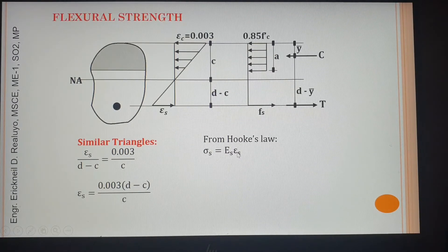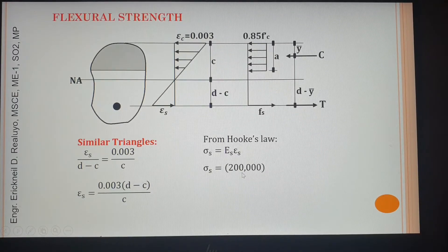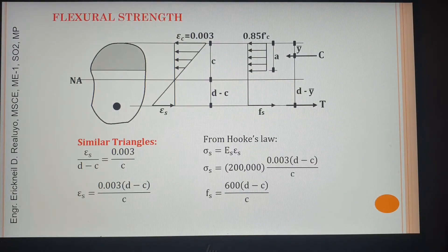Simplifying, this gives us the strain of steel. From Hooke's Law, stress equals E times strain. So if we multiply the strain by E, it becomes stress. Multiplying both sides by E of steel, this strain becomes stress. The proper notation for this stress is fs. This expression will be used for any shape of beam we are going to solve.